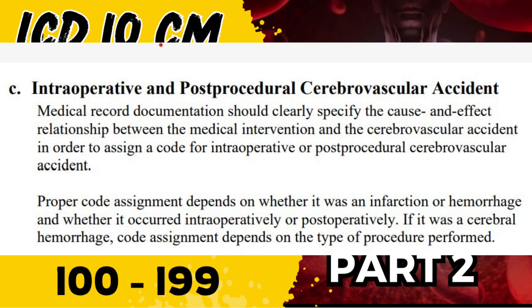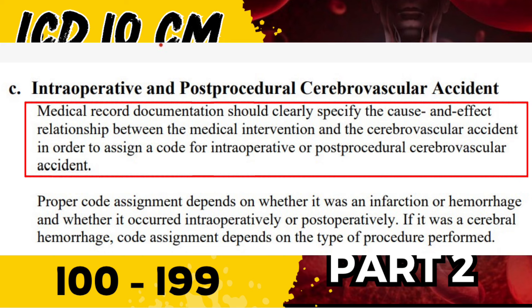Section C covers intraoperative and post-procedural cerebrovascular accident (CVA). This refers to a CVA occurring during an operative procedure or after a surgery has been performed. There are cases where a complication during a procedure leads to a CVA, or the surgery is completed and afterward the procedure causes a complication resulting in a CVA. The medical record documentation must clearly state that the CVA is due to the surgery or procedure, and whether it is intraoperative or post-procedural.